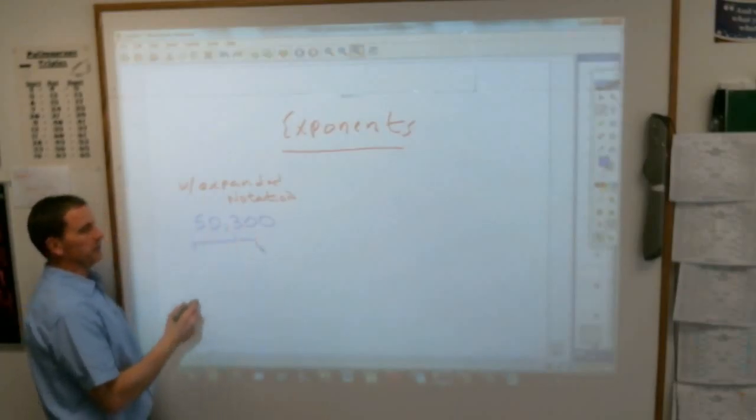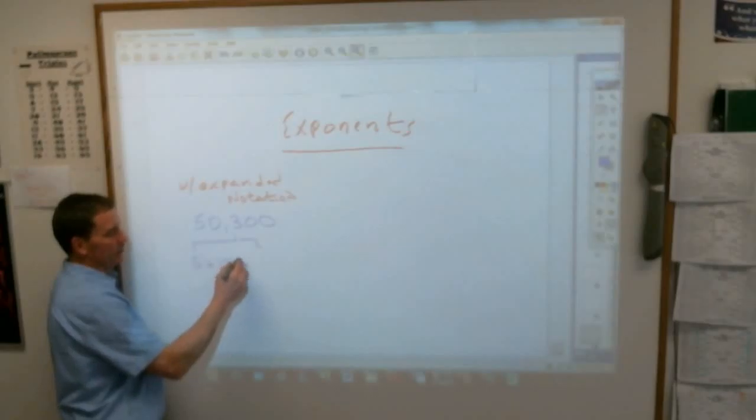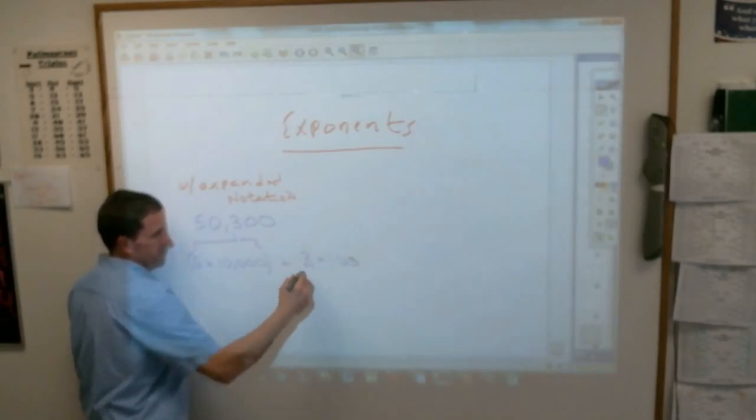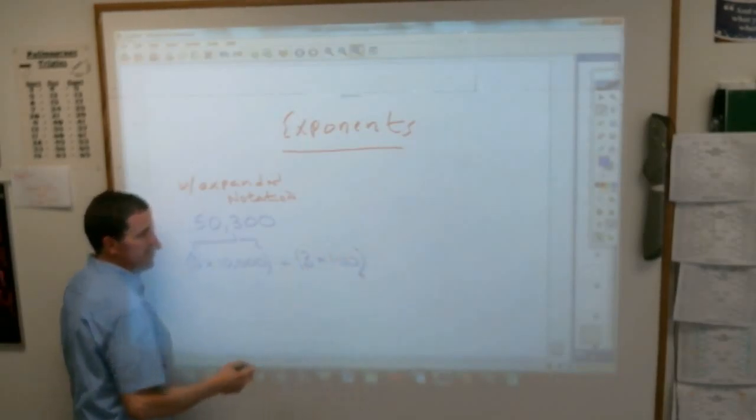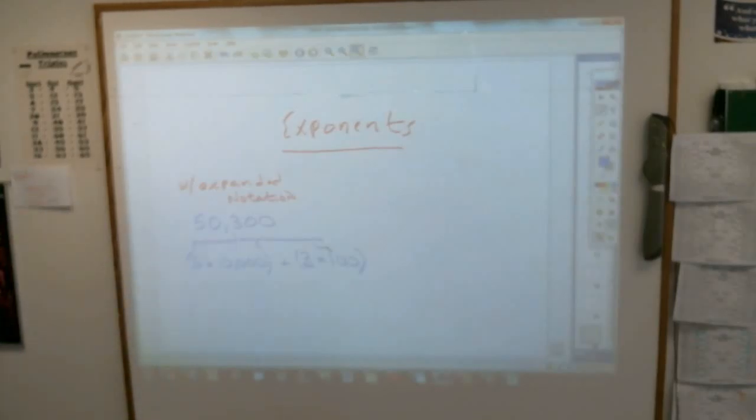50,300 in expanded notation was 5 times 10,000 because that's 50,000, plus 3 times 100. Yeah? Yeah. Aren't we doing that? I think we're still probably doing that right now. Well, we're going to do the same thing, and maybe we've done, sorry, it seems kind of familiar. Okay.